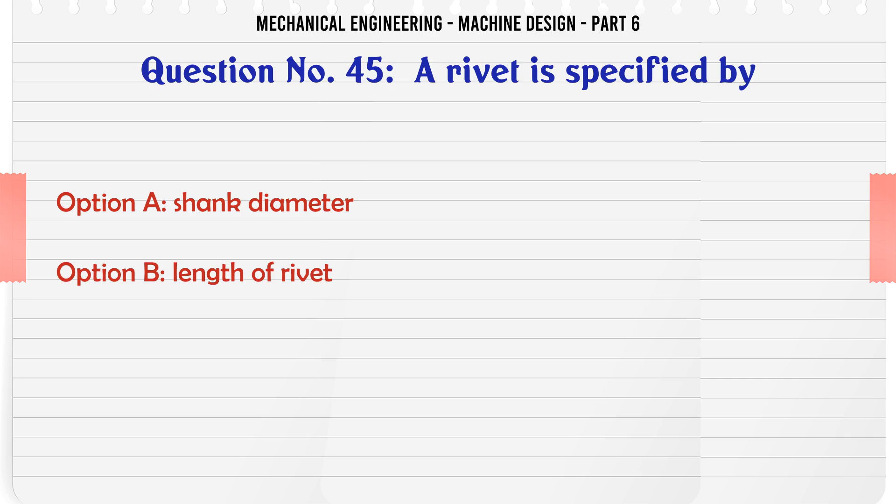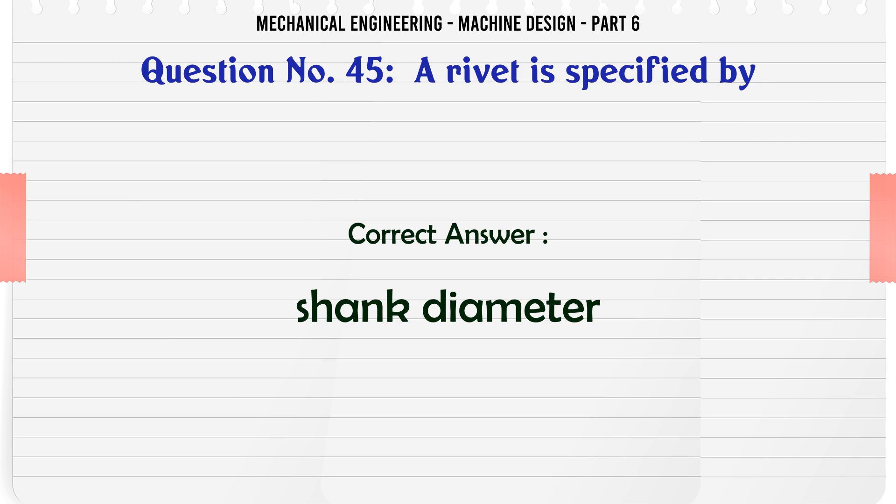A rivet is specified by: A) shank diameter, B) length of rivet, C) type of head, D) length of tail. The correct answer is shank diameter.